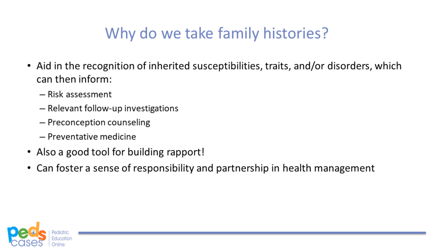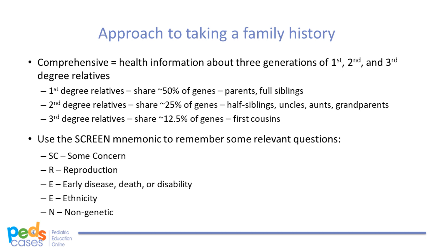Now that we've outlined why family history is a valuable tool, questions that follow naturally are: when and how? We suggest taking a comprehensive family history on initial assessment of all new patients and then updating it on an annual basis. A comprehensive family history spans three generations and includes details on first, second, and third-degree relatives. This can provide us with pertinent positives and negatives — even unaffected family members can help us determine whether a genetic disorder is random, a de novo mutation, or inherited across generations. Strategies such as take-home questionnaires can help capture all relevant information.